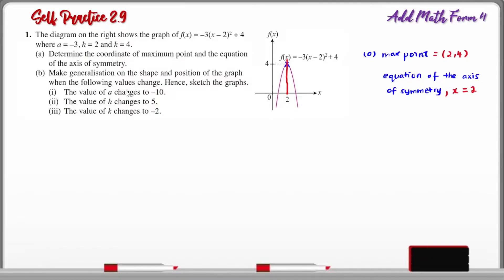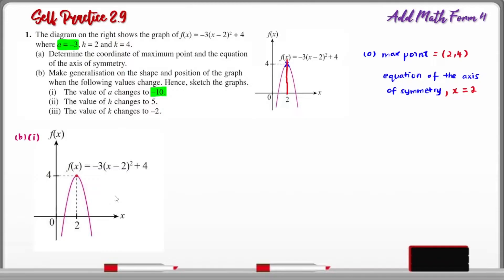B1: The value of a is changed to negative 10. Originally, the value of a is negative 3. For a quadratic graph with a less than 0, the smaller the value of a, the width of the graph decreases — it gets narrower. The red dotted line shows the graph when a changes from negative 3 to negative 10, which is getting narrower. The maximum point remains the same, as we only changed the value of a.